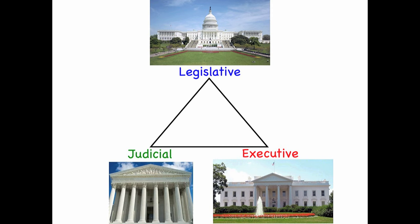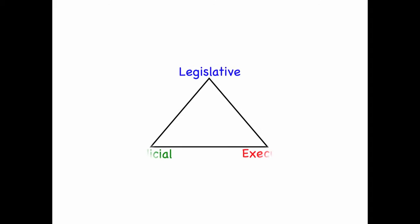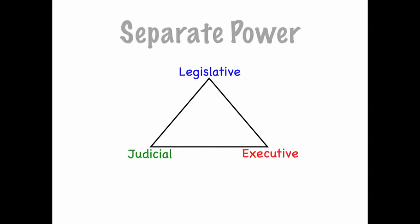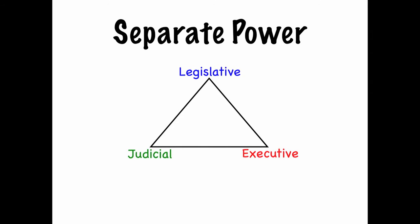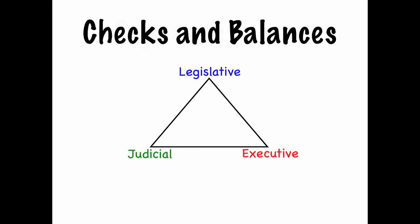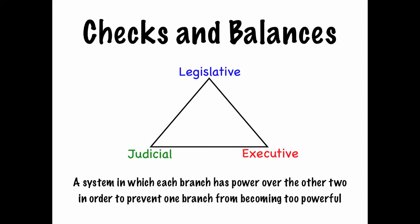The Founding Fathers feared giving one person, or one group of people, too much power, so they created three branches of government in order to separate power. They also created a system known as Checks and Balances. Checks and Balances refers to a system in which each branch has power over the other two in order to prevent one branch from becoming too powerful.